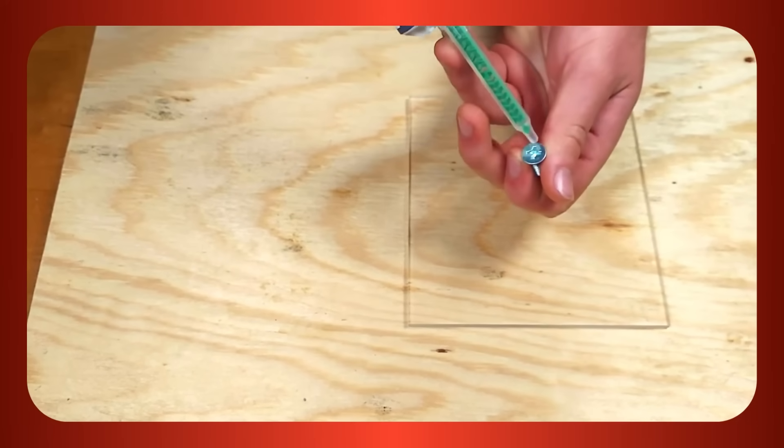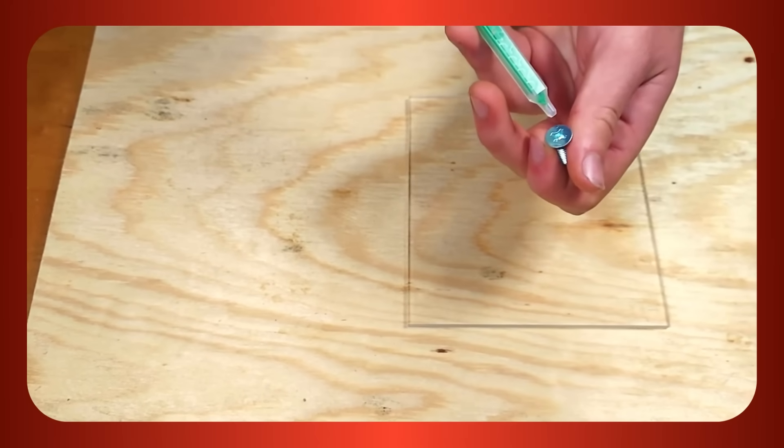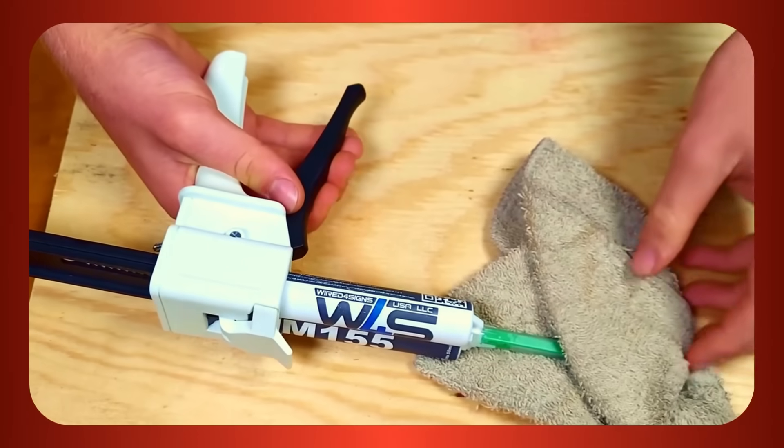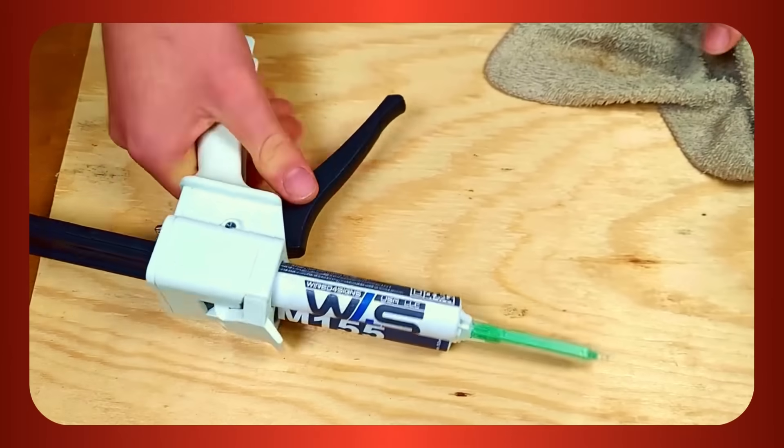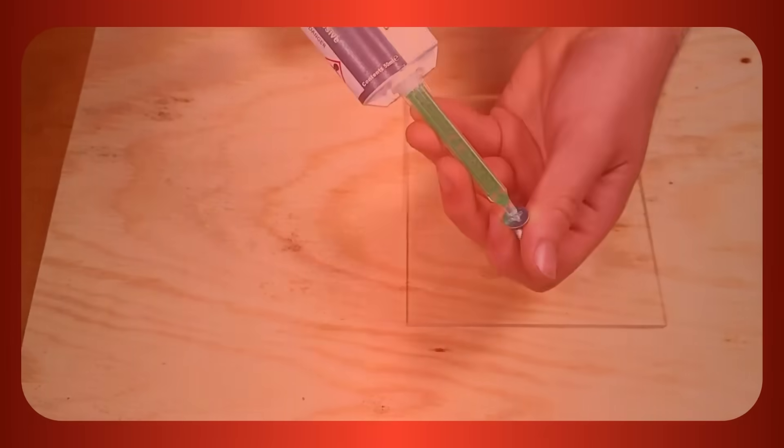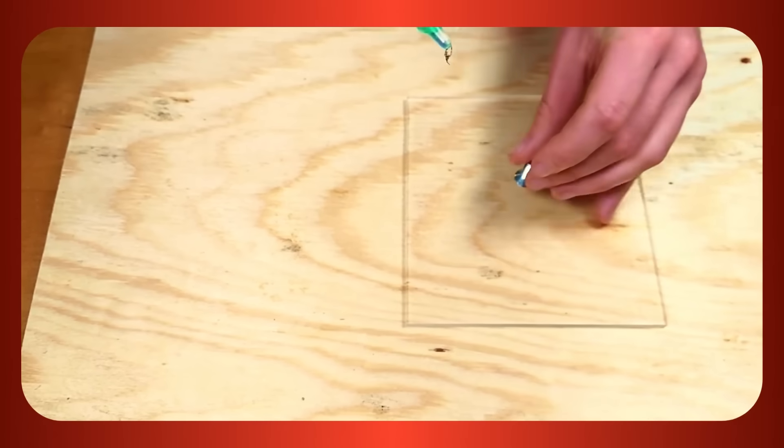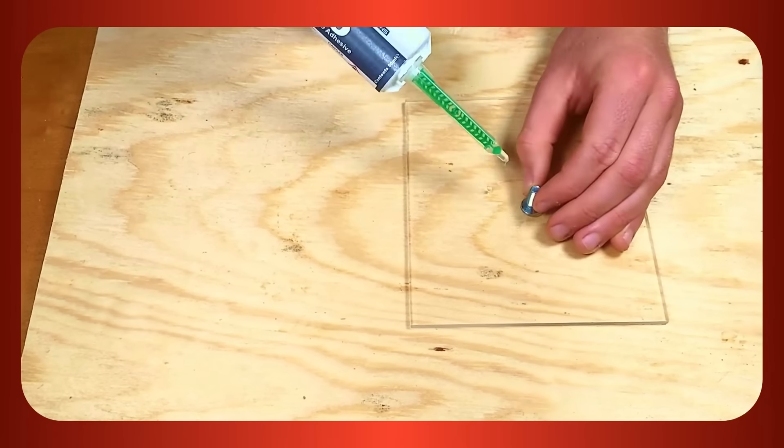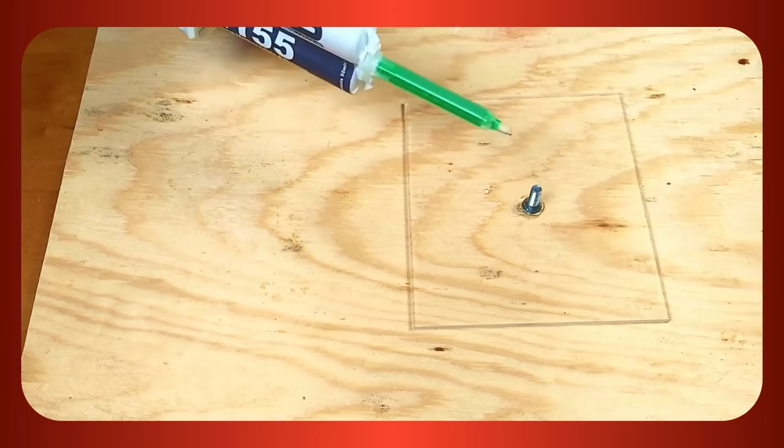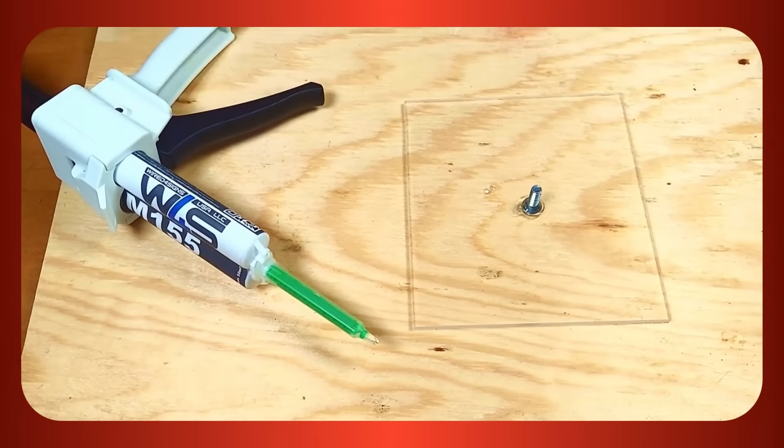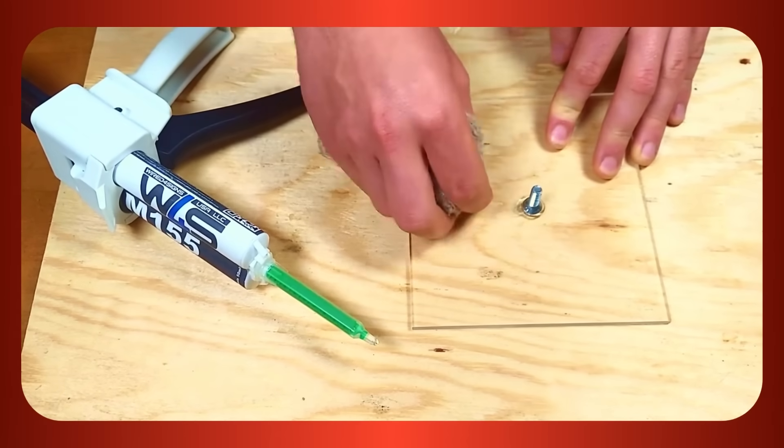For a stronger bond, you can also use sanding paper to roughen the surfaces to be glued before gluing. With a new nozzle, squeeze a blob out onto a rag. It is possible that this first blob is not properly mixed. Quickly wipe up any excess or spilt glue.